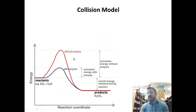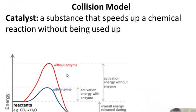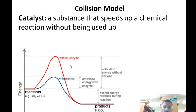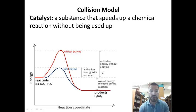What is the effect of a catalyst in the collision model? A catalyst is a substance that speeds up a chemical reaction without being used up. If we look at this reaction here, we see this is an exothermic reaction.